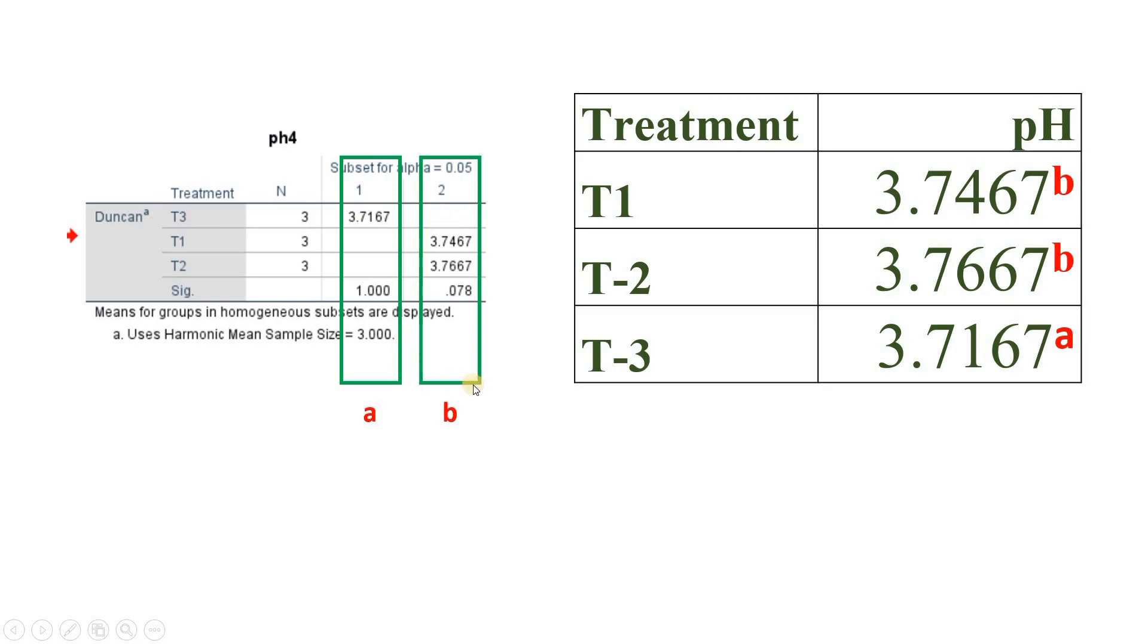For example, if T3 is in columns one and two, the superscript will be named as A as well as B. But here it is only in the A column, so it has the superscript named as only A. So I hope this will clarify all the doubts.